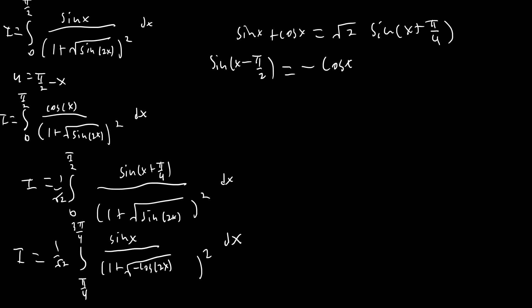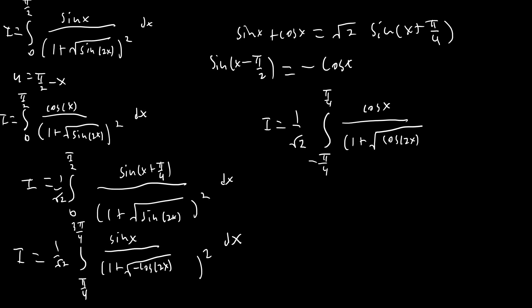So we're going to substitute u equals pi over 2 minus x to fix the sign. Our bounds change to negative pi over 4 to positive pi over 4. We get cosine x on top, and on the bottom 1 plus square root of cosine of (pi minus x). Since cosine of pi minus x equals negative cosine x, we end up with cosine of 2x on the bottom, which is exactly what we wanted.